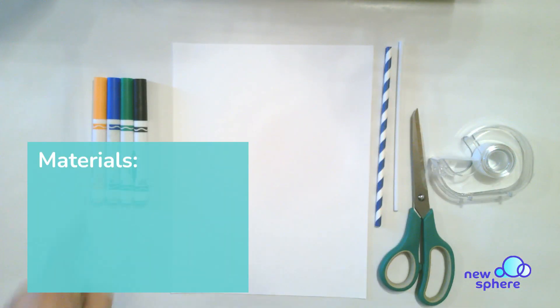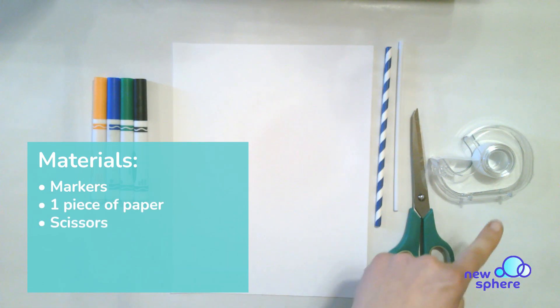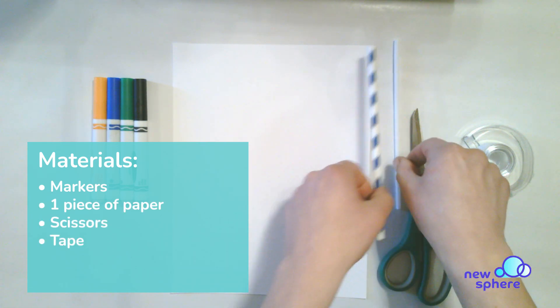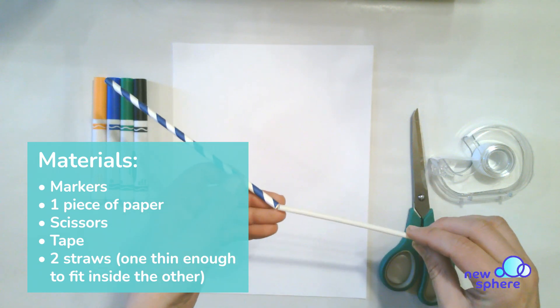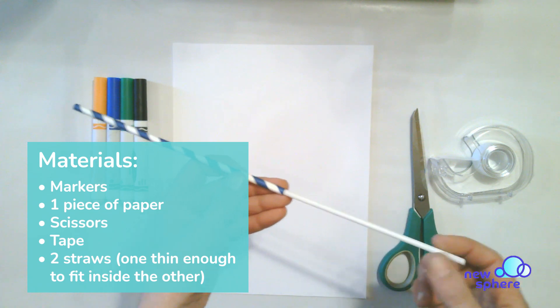We will be using markers, paper, scissors, tape, and two straws. Make sure that one of the straws is thin enough to fit inside the other straw.